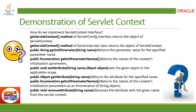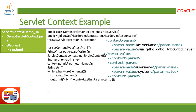There are several methods to get parameters from the deployment descriptor. getInitParameter() returns the parameter value for the specified parameter name. getInitParameterNames() returns an enumeration of all context initialization parameter names. setAttribute() sets a given object in application scope. getAttribute() returns the attribute for a specific name. getAttributeNames() returns context attribute names as an enumeration of strings. removeAttribute() removes the attribute with the given name from the ServletContext.